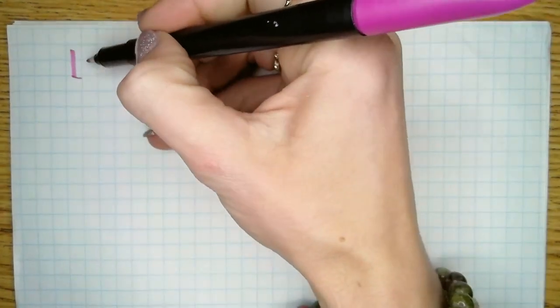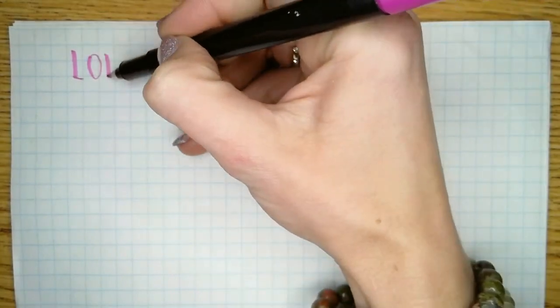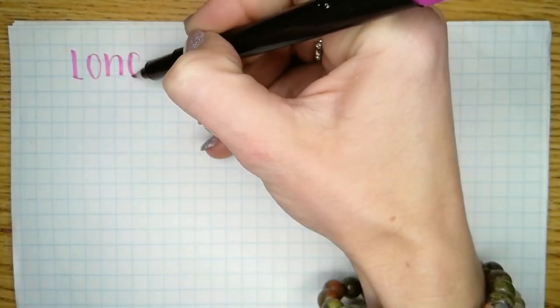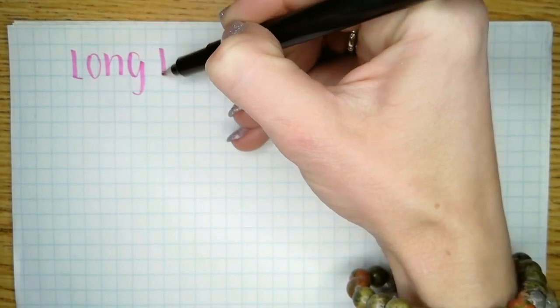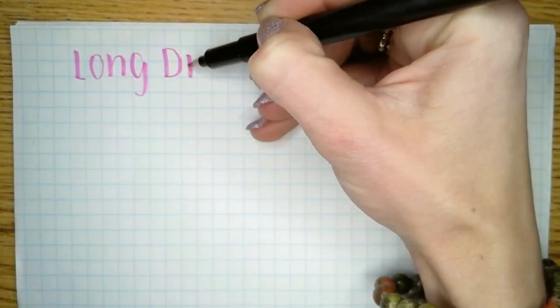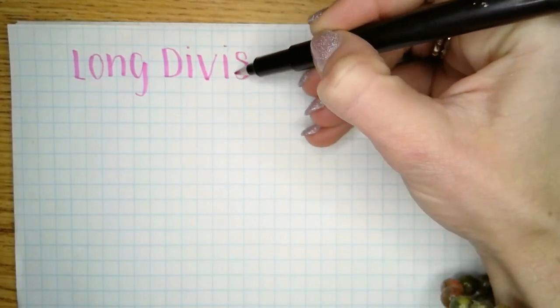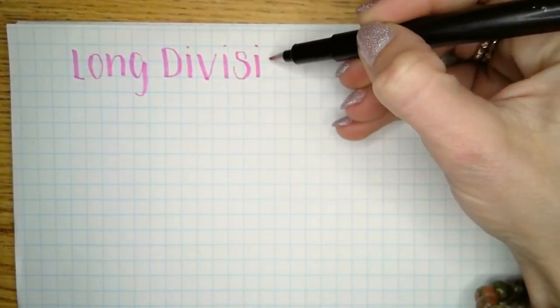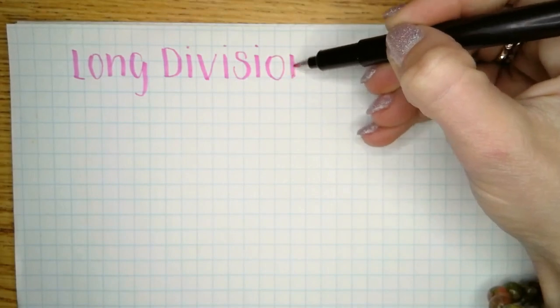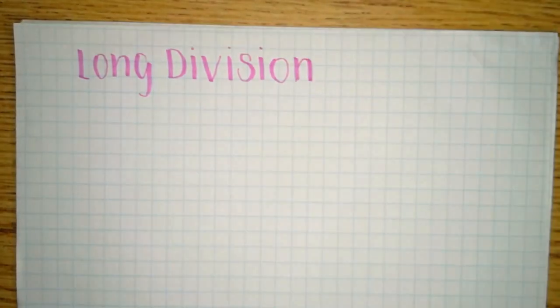We're going to start with long division of polynomials, and from there we'll go into synthetic division. But before we can do long division of polynomials, it's probably a good idea to go over long division from when you were in third or fourth grade, because a lot of us probably don't even think about what we're doing anymore when we do division because it's second nature.